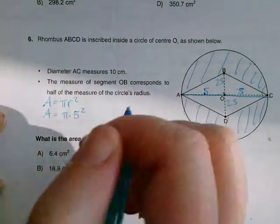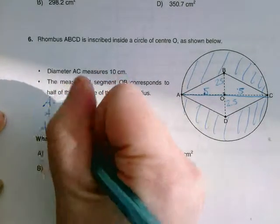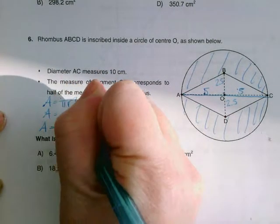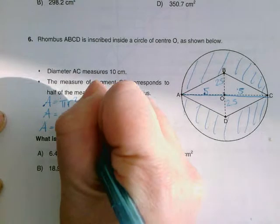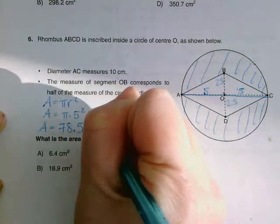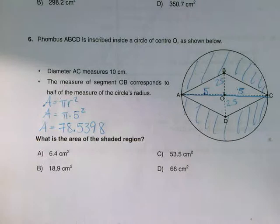Okay, so if you plug that into your calculator, you would get that the area is 78 points—I'm going to keep a few decimals right now. I'm going to keep 5398. Okay, so that's the area of the circle.